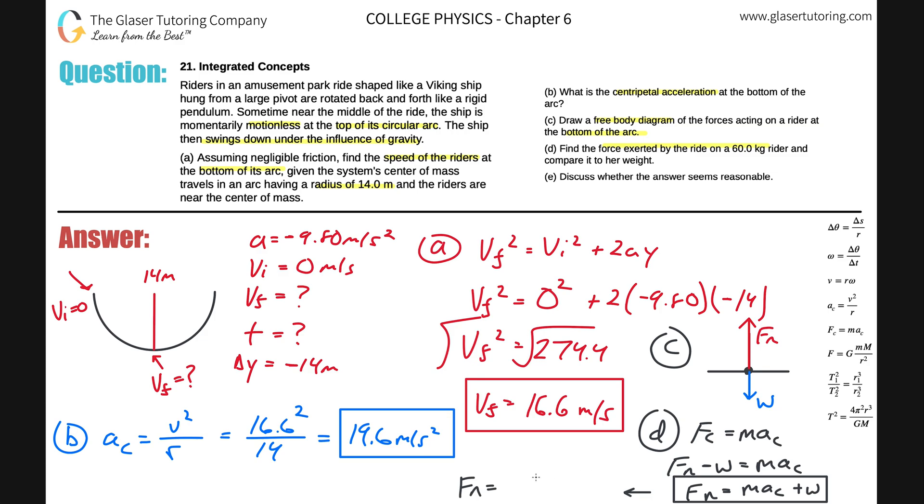Now all you have to do is start plugging in the numbers. The centripetal force here is going to be equal to the mass of the rider, which was 60 kilograms, times that centripetal acceleration of 19.6, use the exact value when you do the calculation, plus the weight of the rider. The weight of the rider is going to be 60 kilograms times the acceleration due to gravity, times 9.8. So we get 60 times 19.6 and then add to that 60 times 9.8. And we get about 1.76 times 10 to the 3 newtons. That's going to be the normal force or the force that the ride is exerting on the rider.